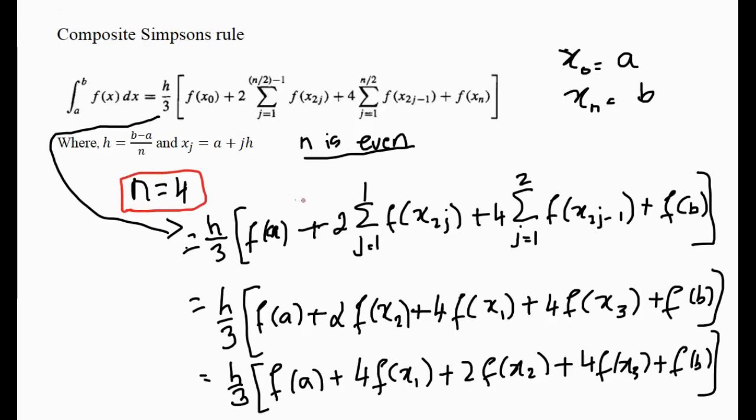n equals 4, as this example is chosen here, and you can try yourself for other examples with n equals 6 and 8, and so on and so forth. I hope this helps to clarify how you expand or how you would use the Composite Simpson's Rule formula. Thank you.